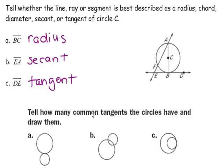Moving down, we need to tell how many common tangents the circles have and draw them. A common tangent is a line that is tangent to two or more circles. Think about how many common tangents A has, how many B has, and how many C has. Write down the number and come back to check your answers.